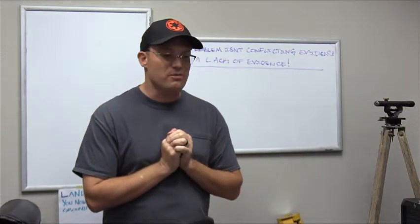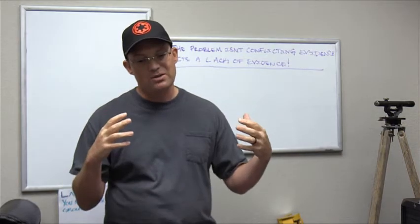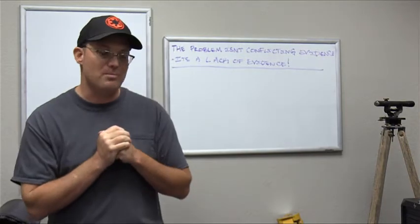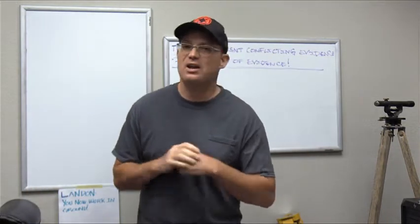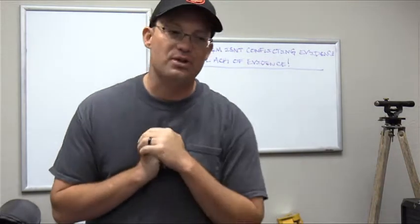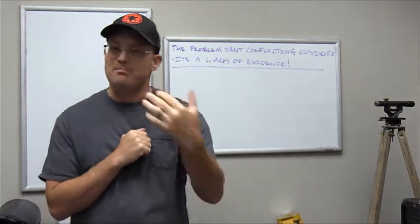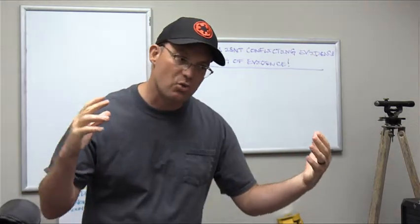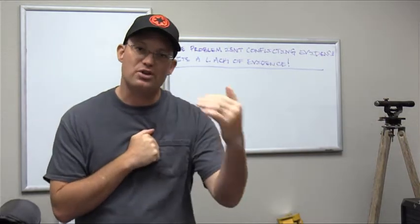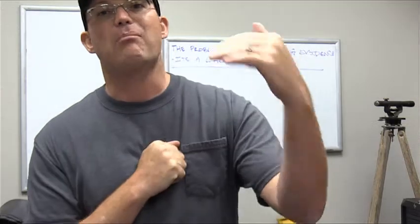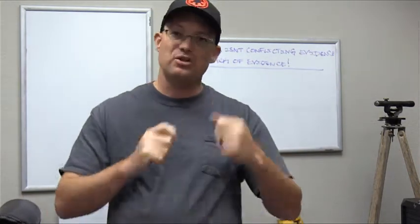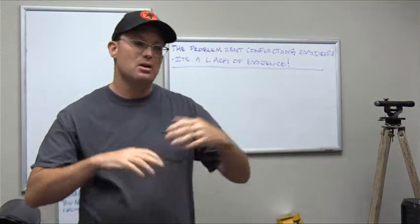In surveying, we have this concept of original monuments. I talk about that in some other videos, but basically original monuments are monuments set and called for on the document that creates the parcel, either a map or a deed. But think about this kind of nuanced example for a minute. So you've got a subdivision map that's filed, an older subdivision map, let's say, that the map doesn't show any monuments. But we know from historical evidence that a week after the subdivision map was filed, the original subdivider, before he sold the lots, went out and monumented the corners of the subdivision.